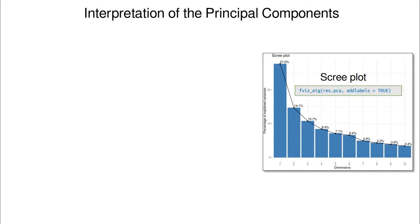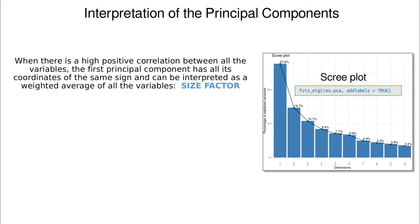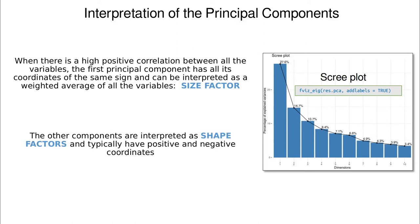Now the important part: how do we interpret these principal components? Typically, when there is high positive correlation among all variables, the first principal component has all coordinates with the same sign and can be interpreted as a weighted average of the variables — this is called the size factor. The next principal components account for less variability but can be interpreted as shape factors, where some coefficients are positive and some are negative, making them better for discriminating between different variables or individuals.